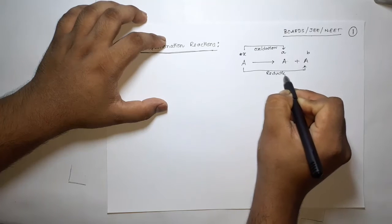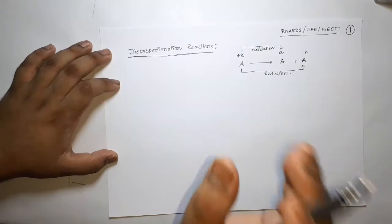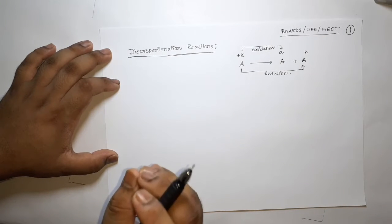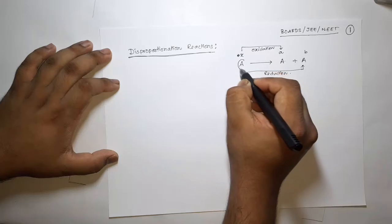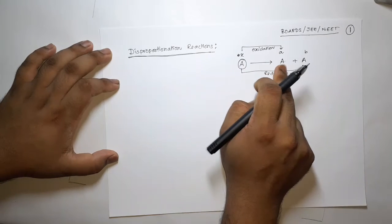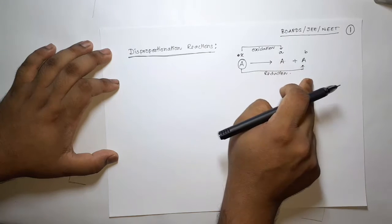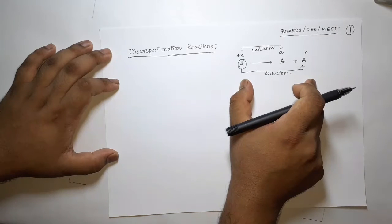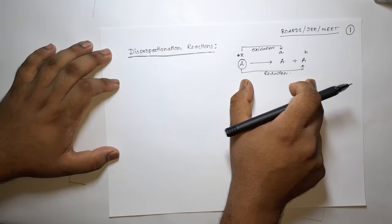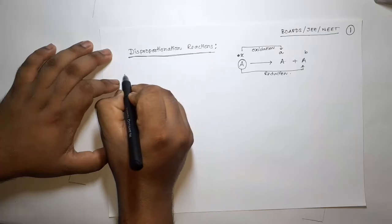So in a reaction in which an element A simultaneously undergoes oxidation and reduction, this type of reaction is called a disproportionation reaction. Let's take an example.